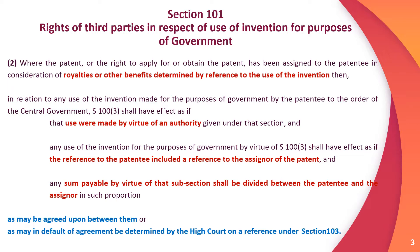This effect applies as if the use were made by virtue of an authority given under that section, and any use of the invention for government purposes shall have effect as if the reference to the patentee also includes reference to the assigner of the patent. Any sum payable by virtue of that subsection shall be divided between the patentee and the assigner in a proportion agreed between them, or as may be decided by the High Court under Section 103.